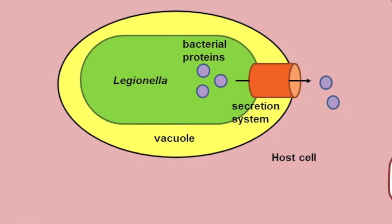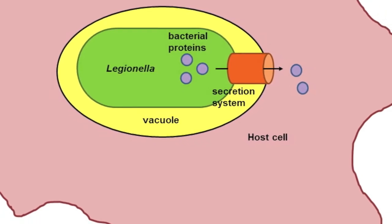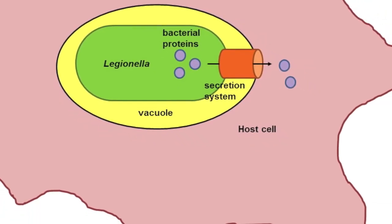It's within that niche that it then starts to replicate to very high numbers. The way it accomplishes that is by using a type 4 secretion system - like a syringe or needle that allows the bacteria to transport its own proteins into the host cell cytoplasm, where they're able to modulate a variety of host cellular processes.